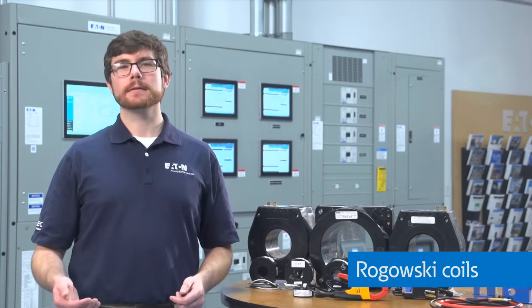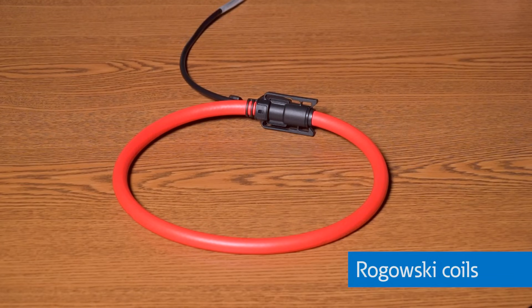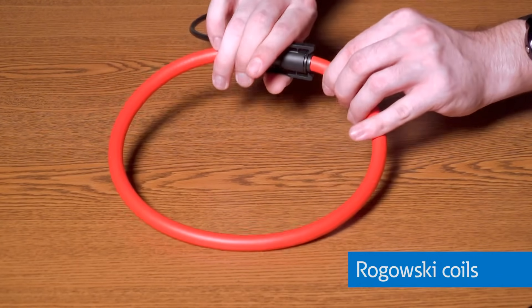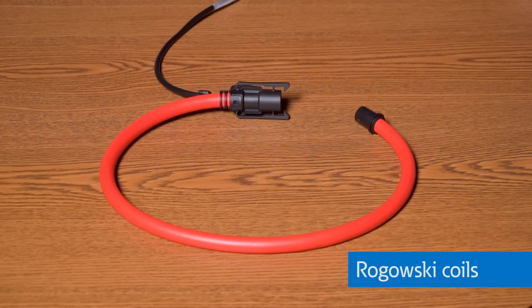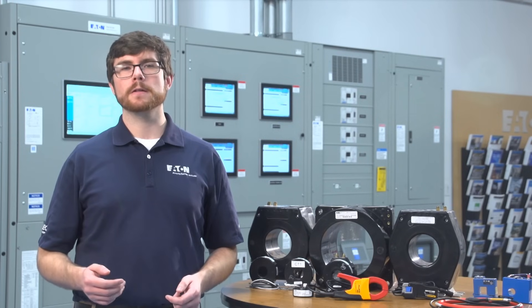Many multimeters utilize a combination of CTs and Hall effect sensors in order to get an accurate current measurement. Finally, Rogowski coils are an open-loop current transformer using an open-air core with a very low inductance that is capable of measuring very fast transient currents and AC currents. Due to the low inductance, the signals that Rogowski coils generate are very small and require amplification and a DC power supply like a Hall effect sensor.